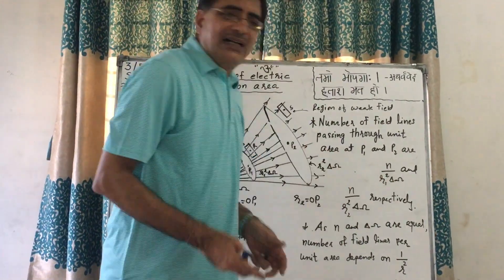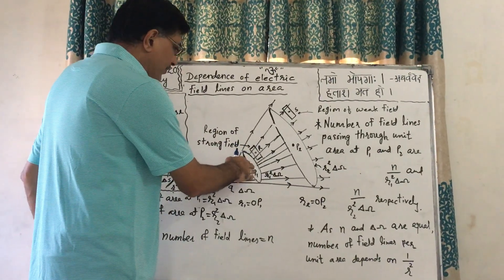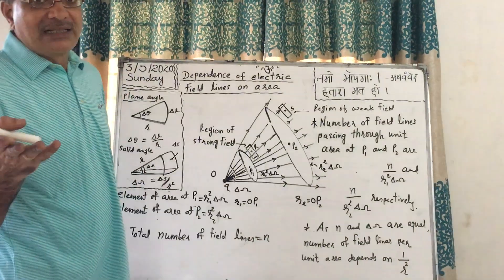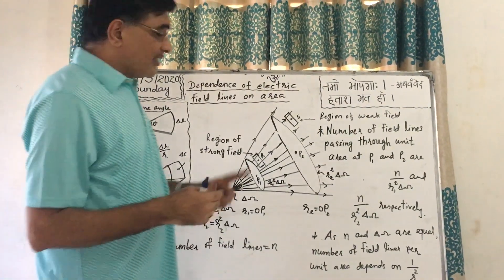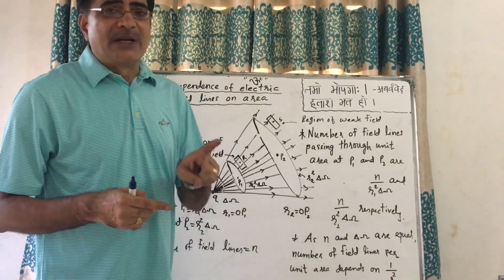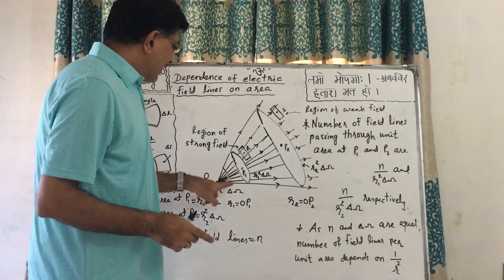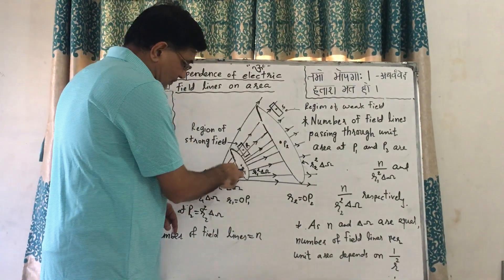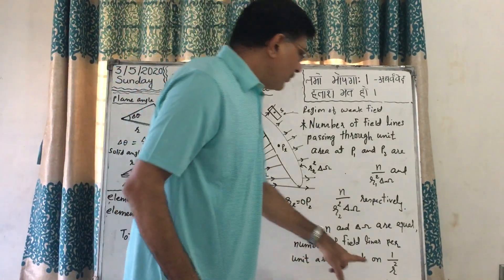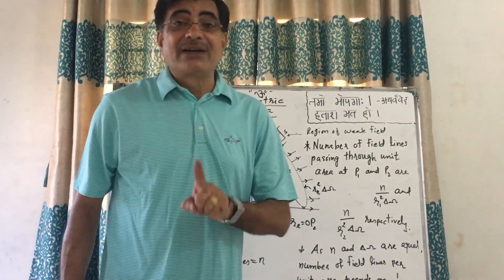Since N and delta omega are the same for both elements of area, the number of field lines passing through unit area depends on R squared. Here R1 is less than R2. So when R is less, the number of field lines passing through unit area is more.